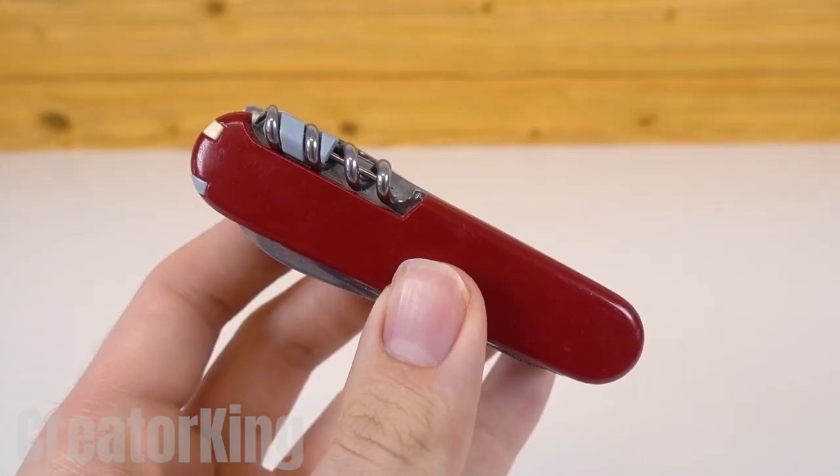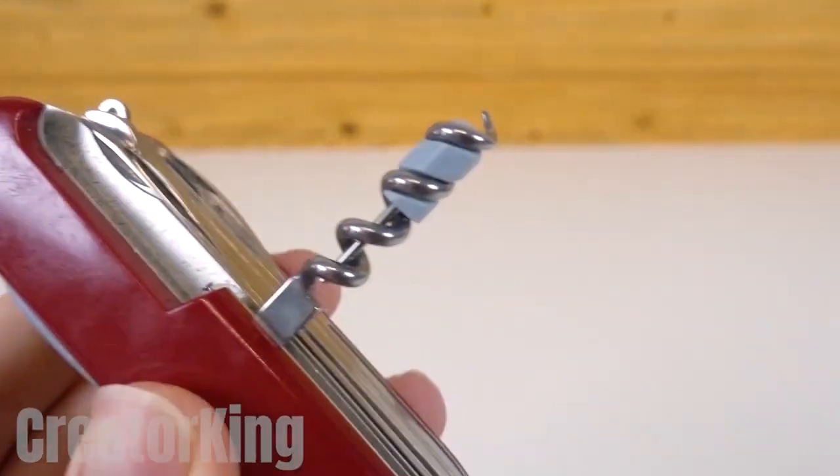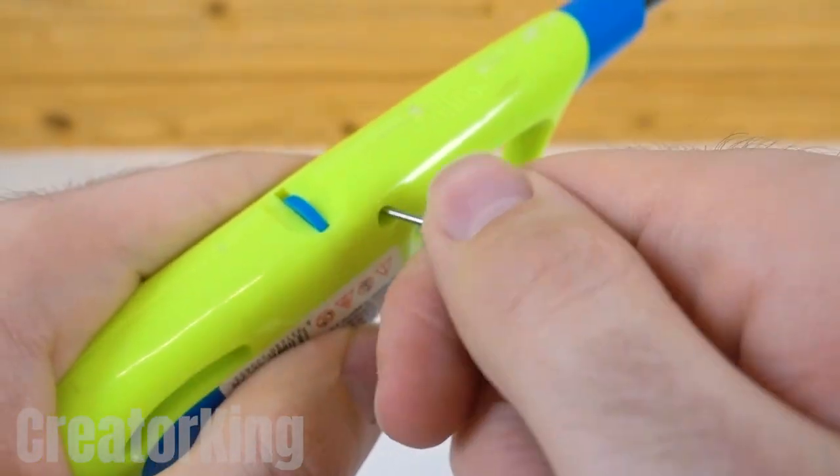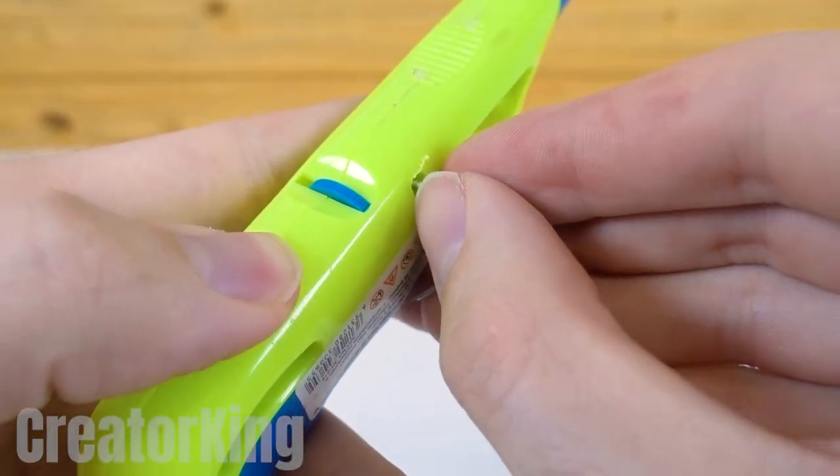For the last invention of the day, we'll need a long kitchen lighter. Get your Swiss Army knife and take out the small piece that comes in the corkscrew section so you can remove the screws and dismantle the lighter.